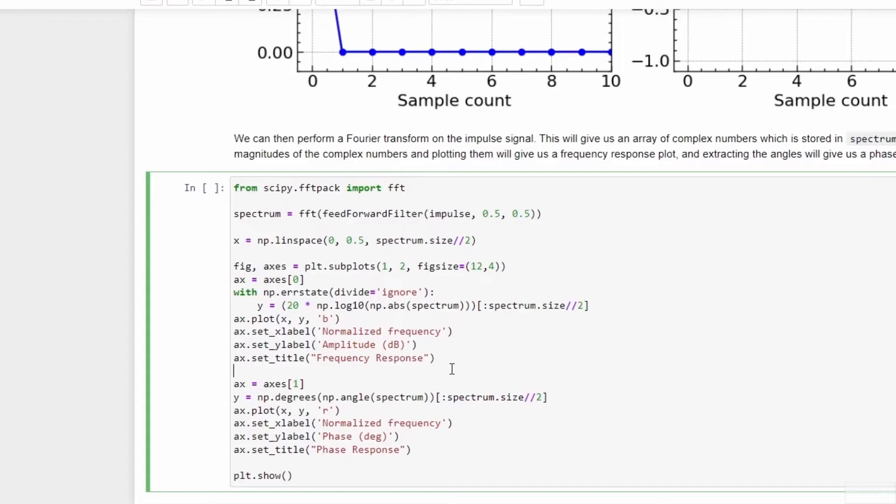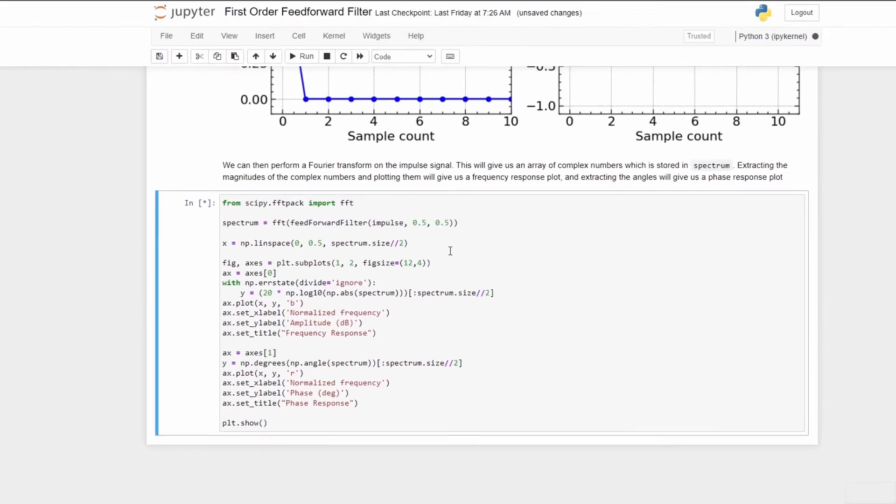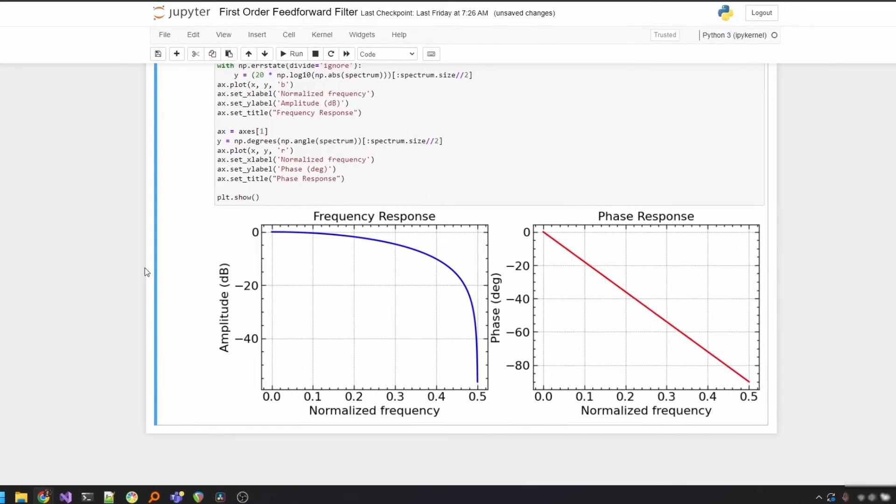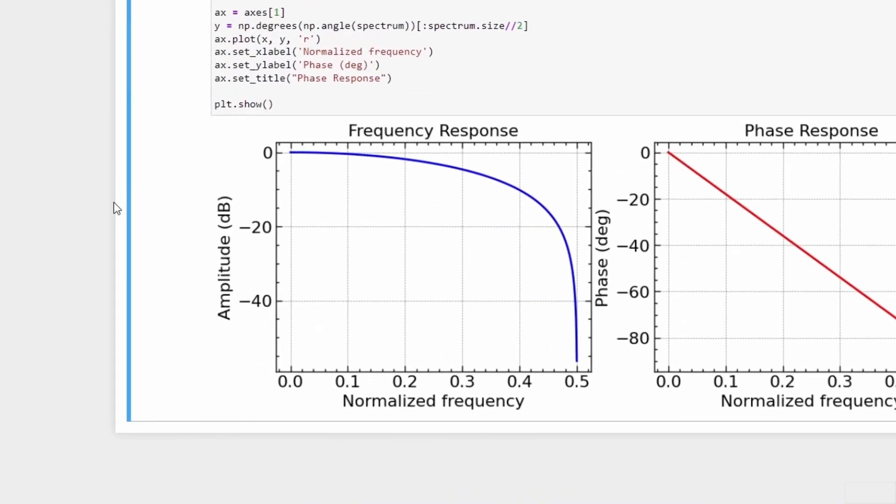And the angle value gives us the phase of the different frequencies. So I can plot both the frequency response and the phase response. So if we filter the impulse signal through the first order feedforward filter with the coefficients of a0 and a1 as 0.5 each, we get the following graphs. On the left is the frequency response graph, and this is more like it. This gives us a lot of valuable information.